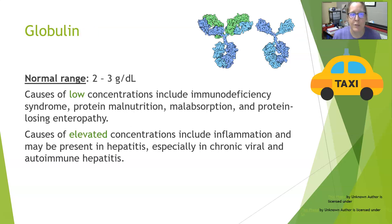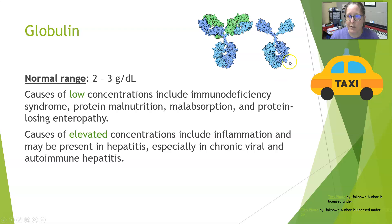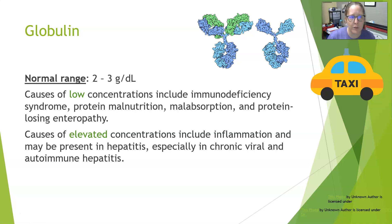Globulin is the other half of the protein. About half the proteins in the body are albumin; the other half is globulin. There are alpha, beta, and gamma globulins. Gamma globulins are your antibodies, and many of the alpha and beta globulins function as transport proteins in the blood. The normal range for globulin is 2 to 3 grams per deciliter.